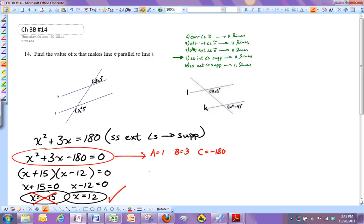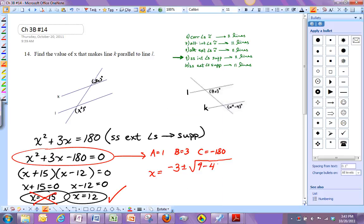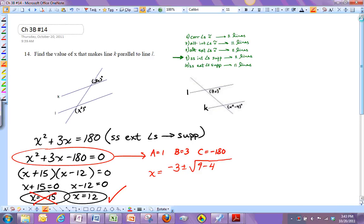and then you plug it into the quadratic formula. Negative B plus or minus B squared minus 4AC, all divided by 2A.